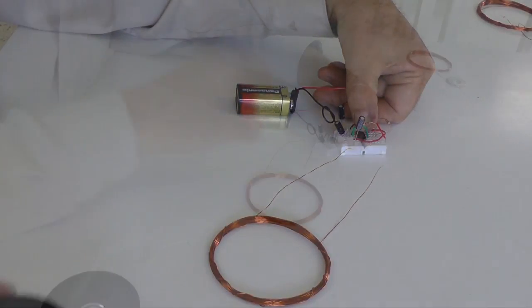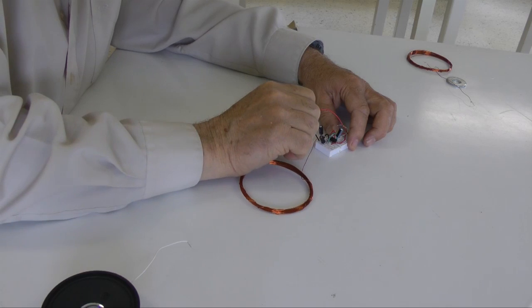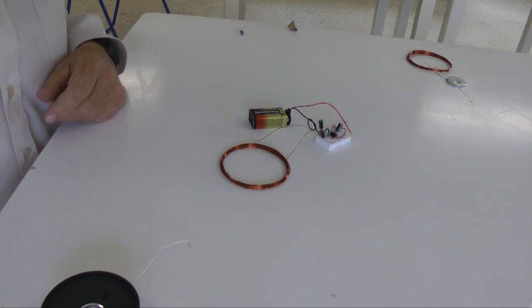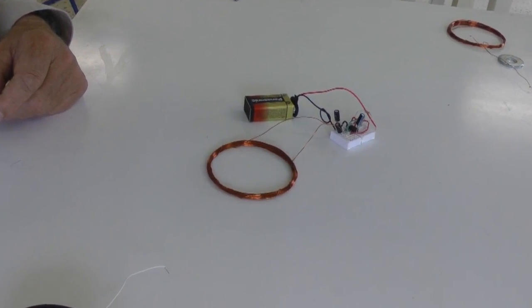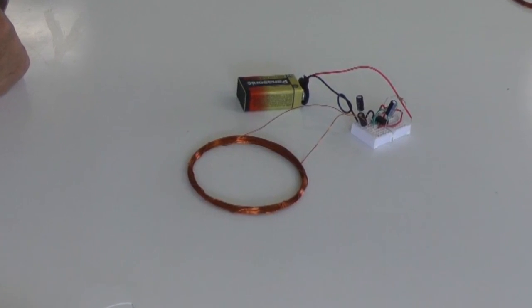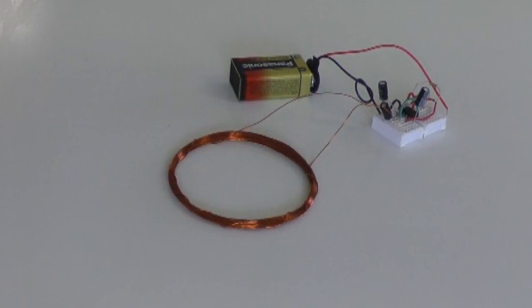I removed the speaker and connected one of the coils in its place. This coil is the primary coil. There is no sound, but the pulsing current is flowing in the coil, creating a pulsing magnetic field.